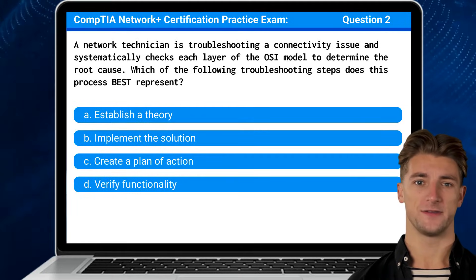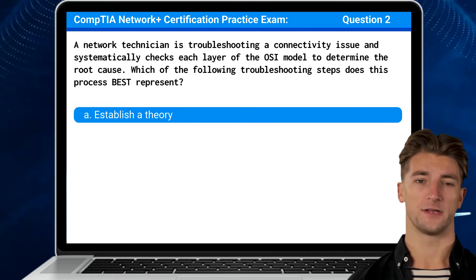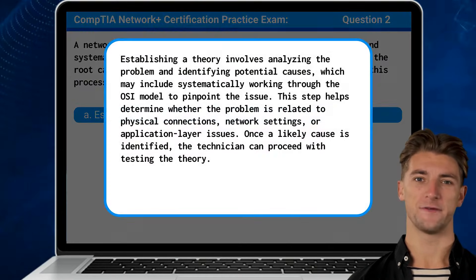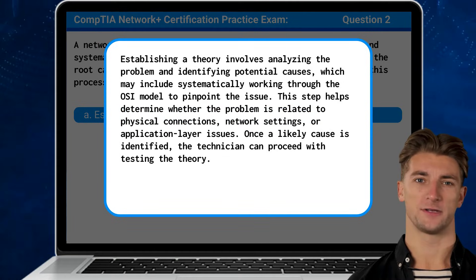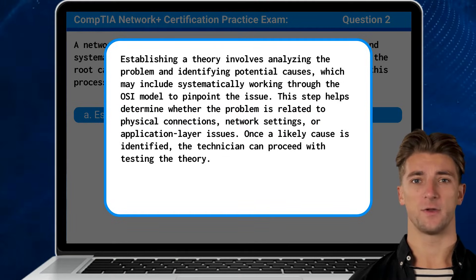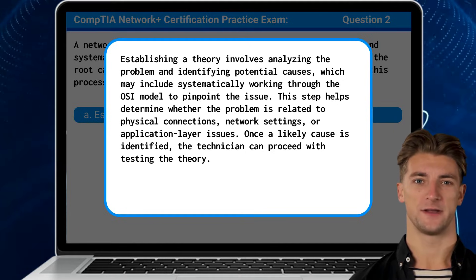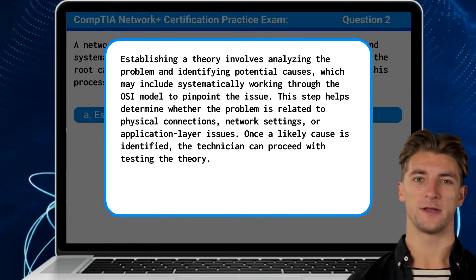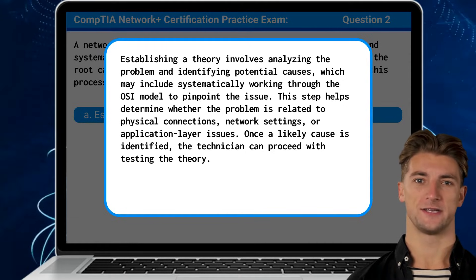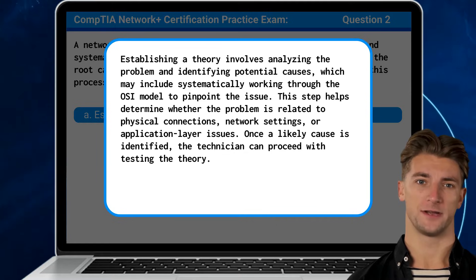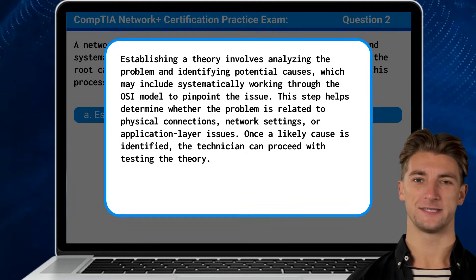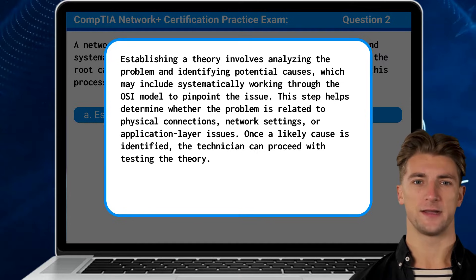The answer is A: Establish a theory. Establishing a theory involves analyzing the problem and identifying potential causes, which may include systematically working through the OSI model to pinpoint the issue. This step helps determine whether the problem is related to physical connections, network settings, or application layer issues. Once a likely cause is identified, the technician can proceed with testing the theory.